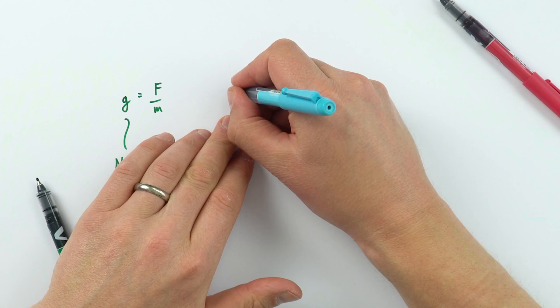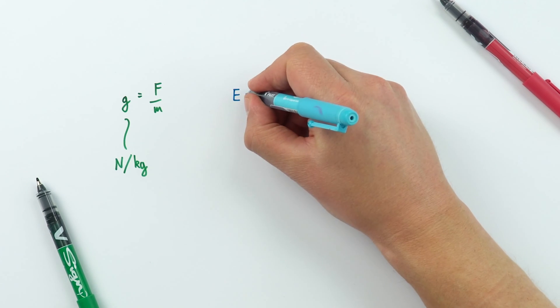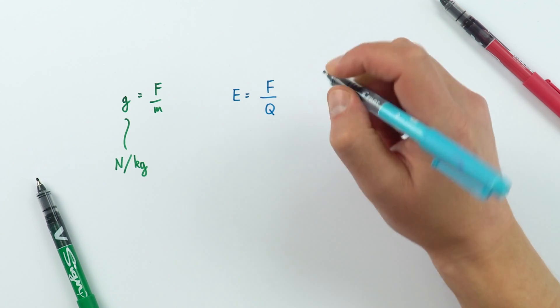The second type of field, the electric field, is between charged objects. We can actually represent this, especially at A level, with a big E to show the electric field. This is the force per unit positive charge. A gravitational field can only be attractive. An electric field could be attractive or repulsive.